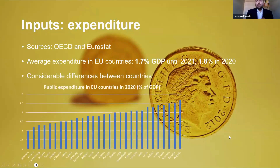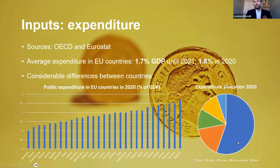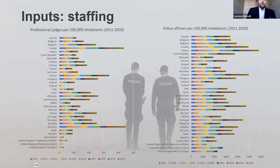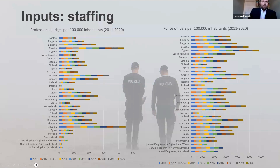The average expenditure for law enforcement and criminal justice in EU countries was 1.7% of GDP, with a slight decrease of 0.1 points from 2020. The vast majority of spending goes into police, followed by courts, then prisons, then fire protection. There are considerable differences between countries in both total expenditure and distribution. Countries like Croatia, Cyprus, and Slovenia have a lot of staff in police forces and the judiciary — yet interestingly, some of those countries also perform among the worst in crime prevention and law enforcement.